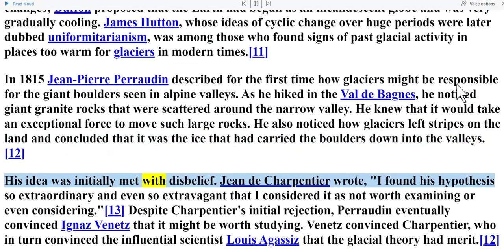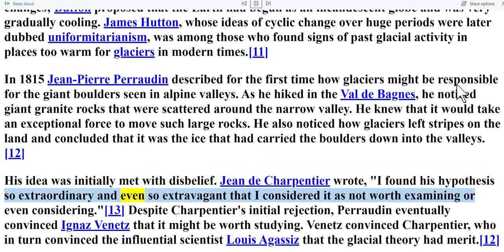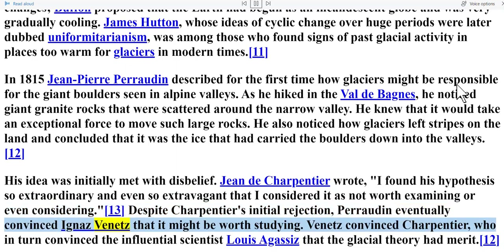His idea was initially met with disbelief. Jean de Charpentier wrote: 'I found his hypothesis so extraordinary and even so extravagant that I considered it as not worth examining or even considering.' Despite Charpentier's initial rejection, Perraudin eventually convinced Ignaz Venetz that it might be worth studying. Venetz convinced Charpentier, who in turn convinced the influential scientist Louis Agassiz that the glacial theory had merit.